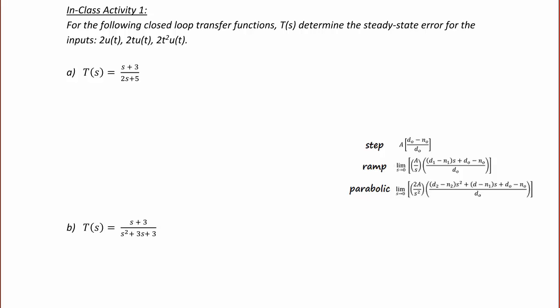Let's try some examples. In class activity 1, note that I have pasted the three formulas we just derived on the right side of the screen as a reminder. For the following closed loop transfer functions T of s, determine the steady state error for the inputs 2u(t), 2t·u(t), and 2t²·u(t) — our step, ramp, and parabolic inputs with amplitude A equal to 2.